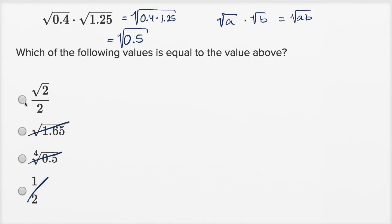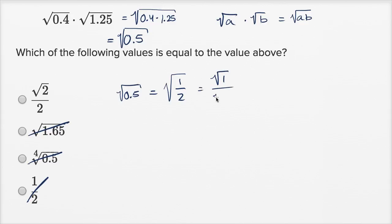So this should be the same thing as the square root of 0.5. The square root of 0.5 is the same thing as the square root of 1/2, which is the same thing as the square root of 1 over the square root of 2. The square root of 1 is just 1, so it's 1 over the square root of 2.